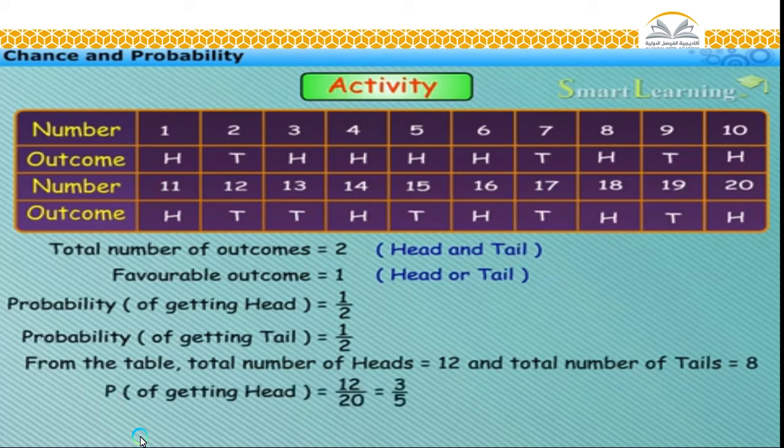Thus, the probability of getting head is twelve upon twenty, that is, three upon five. And probability of getting tail is eight upon twenty, that is, two upon five.